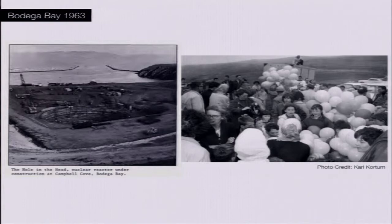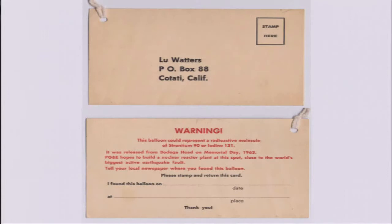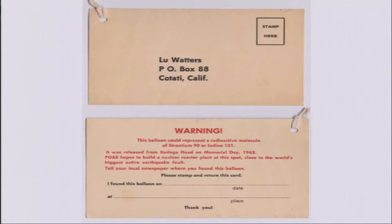My last story is about Bodega Bay in 1963 — just about on the Free Speech Movement 50-year anniversary. That dig site is for a nuclear reactor that was going to be placed there. The people with the balloons are not celebrating — they're protesting. They're protesting by releasing balloons with a little note attached to each one. The note says that this balloon represents a radioactive molecule of strontium-90 or iodine-131. It's a really ingenious way to invite the public to participate — if one lands in your yard, you realize you would have been exposed to this issue. Luckily, the reactor was not built, literally within a kilometer of the San Andreas Fault.